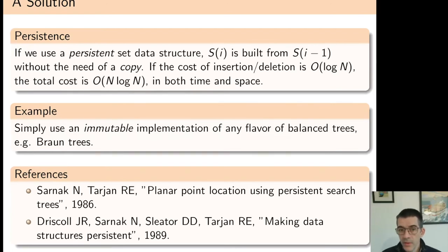An easy way to get a persistent set data structure is to implement an immutable version of any flavor of balanced trees. You don't have to go for something as complex as AVL or red-black trees. You can, for instance, use a much simpler data structure like Braun trees. If you're interested in more details, you can look at the planar point location papers and the subsequent work on persistent data structures by these authors. You will see that the solution goes even further by providing a solution which is in linear space for planar point location.